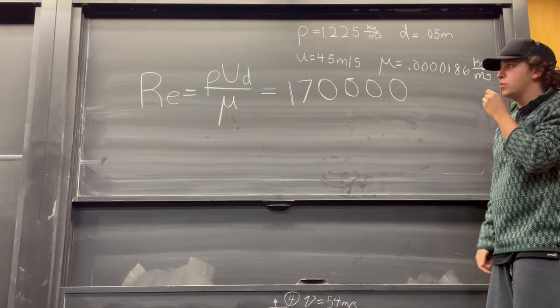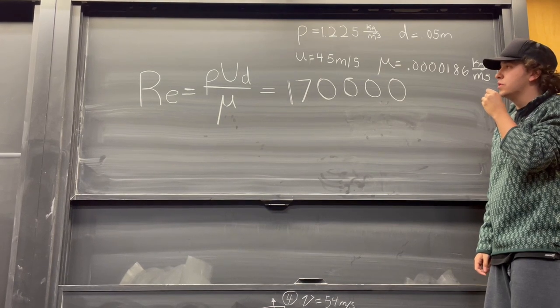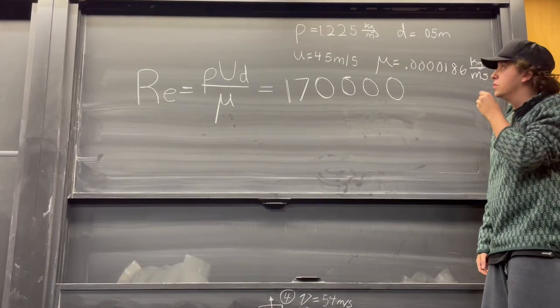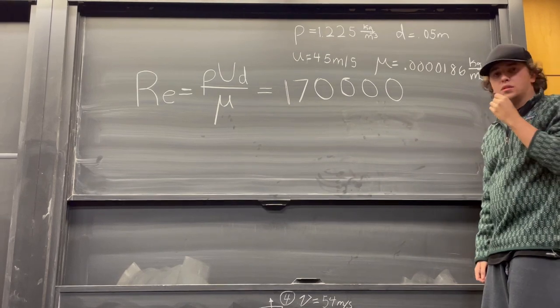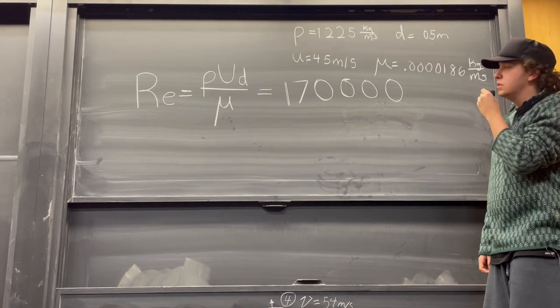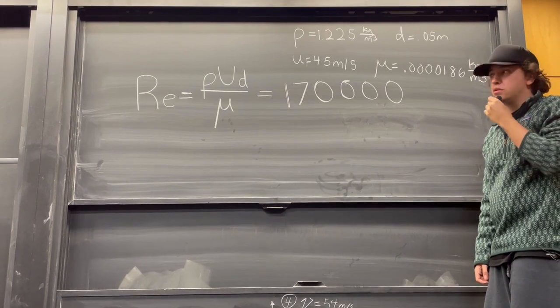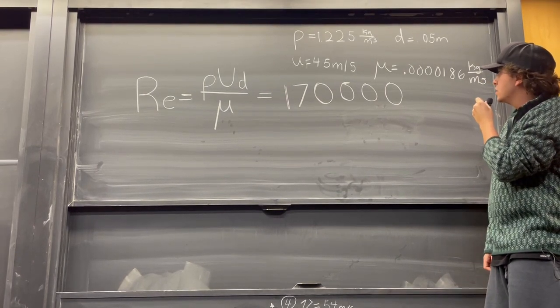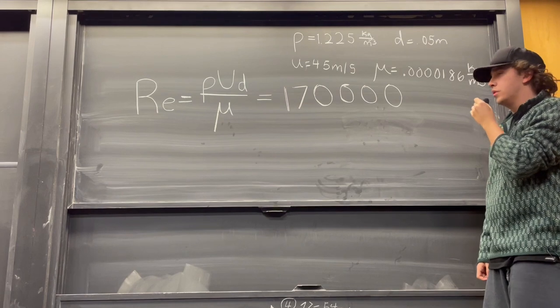ρ is a known quantity because of incompressible flow. The characteristic length is the inner diameter of the inlet. u is the 45 meters per second that we measured, and μ is the viscosity of air, also a known quantity.